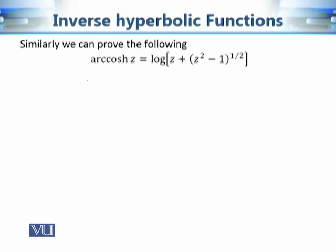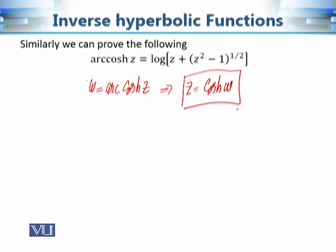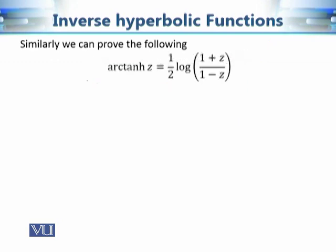Similarly, we can prove that arc cosine hyperbolic z equals log of z plus the square root of z squared minus 1. You assume it equals w, use the definition of cosine hyperbolic w, and follow the same steps. For arc tangent hyperbolic z, the same approach works, and you can also use the relation between the tangent hyperbolic function and the sine and cosine hyperbolic functions.